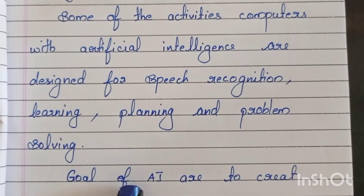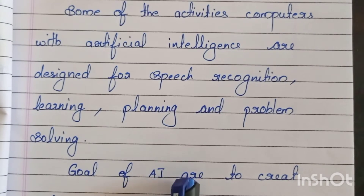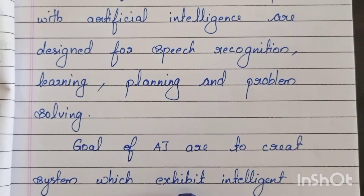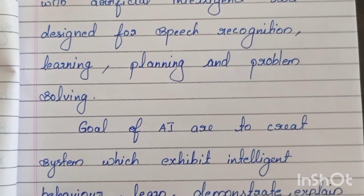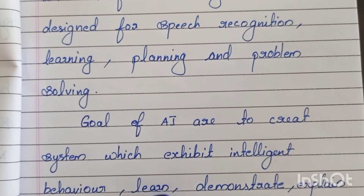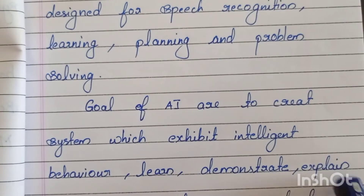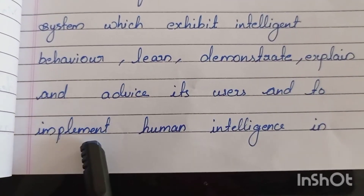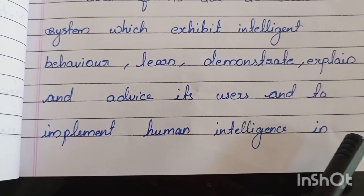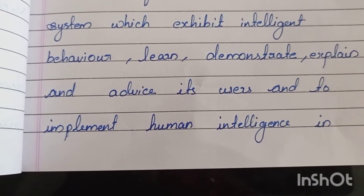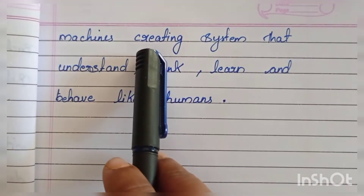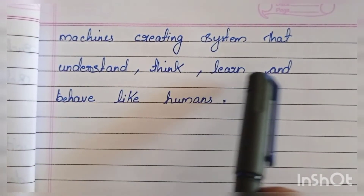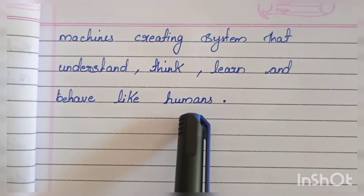The goals of artificial intelligence are to create systems which exhibit intelligent behavior, learn, demonstrate, explain and advise its users, and to implement human intelligence in machines, creating systems that understand, think, learn and behave like humans.